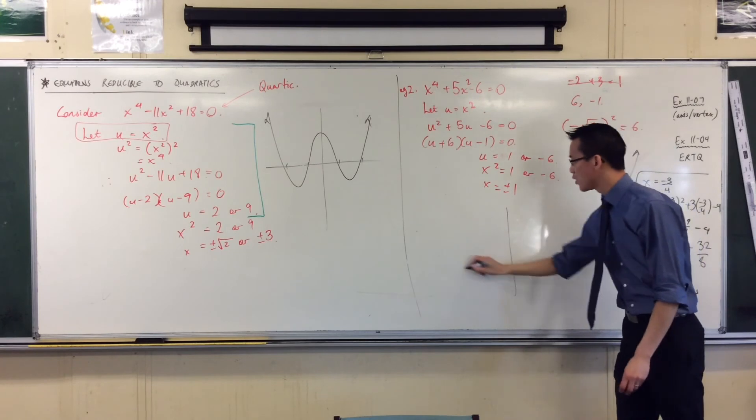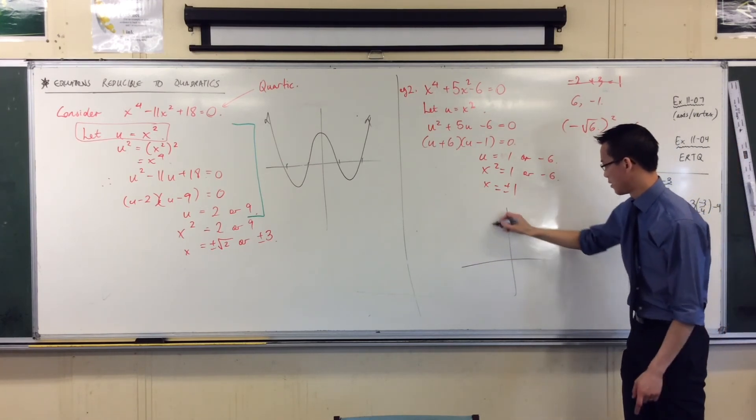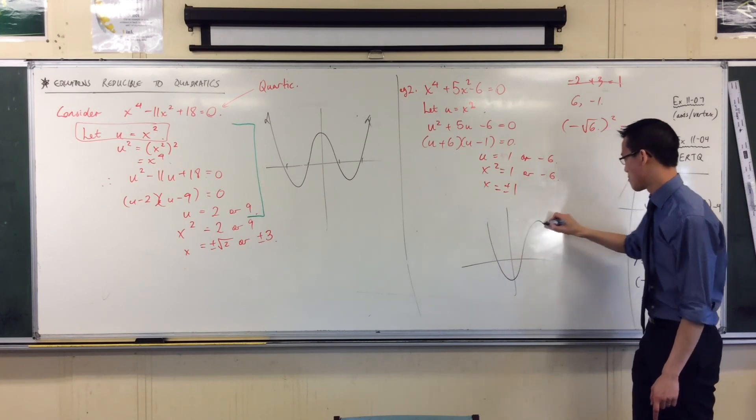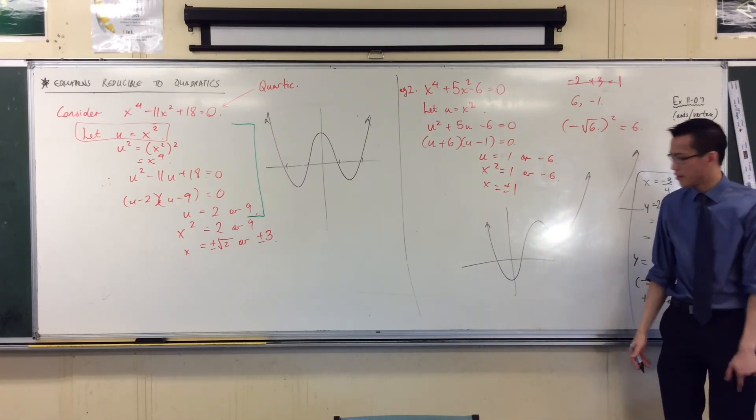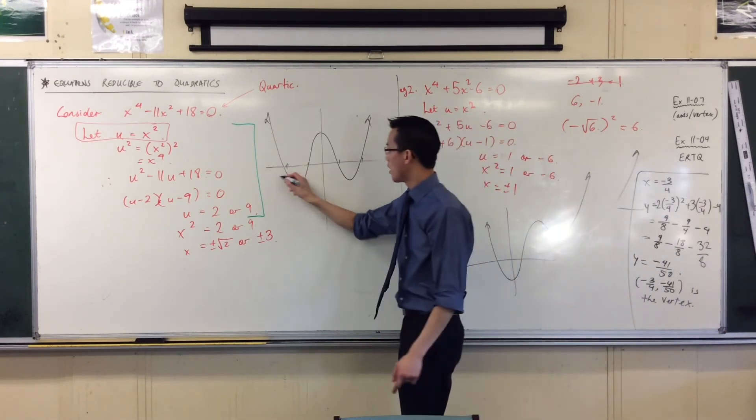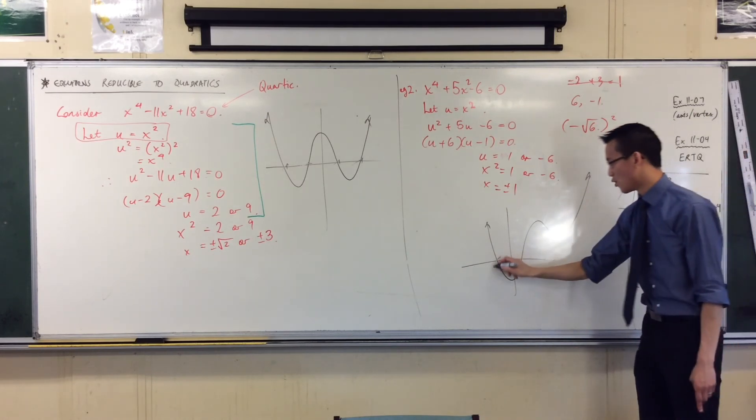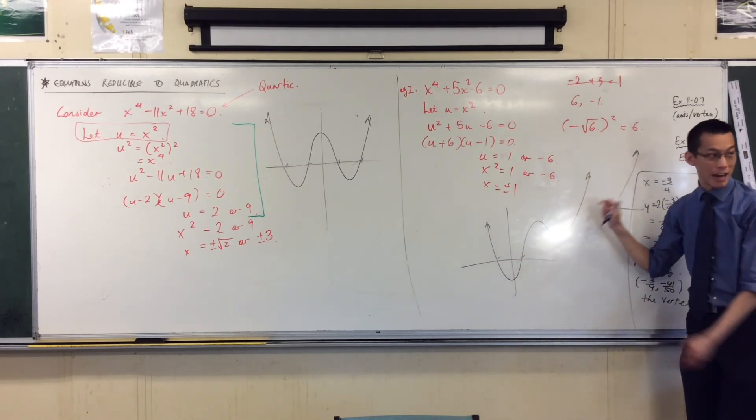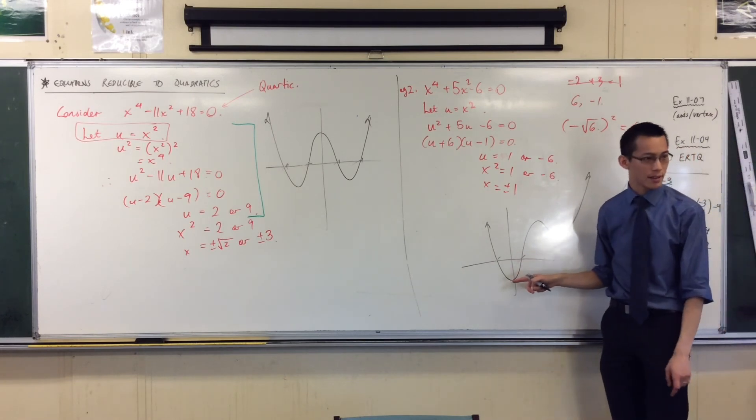Here, what's going to happen, because you've only got two solutions, is you'll get a shape kind of like this. It still wiggles around. But you see how I've got 1, 2, 3, 4 solutions here, but over here I've only got 2. It just means this wiggle happens too high or too low or something else, so that it never actually intersects.